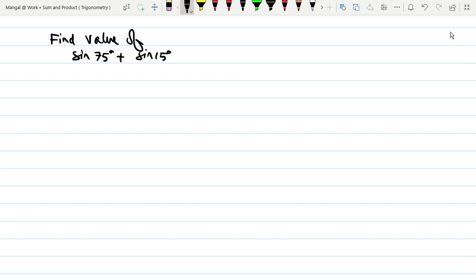The question is find the value of sin 75 degree plus sin 15 degree. This is a short question, 1 marks, 2 marks. This is sin C and sin D, sin C and sin D is a sum that we have to break down.